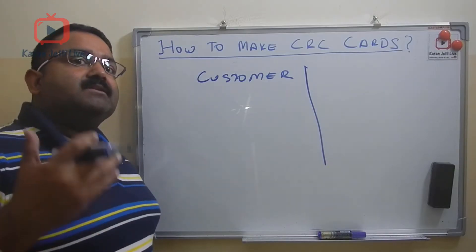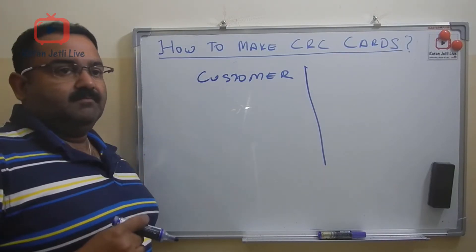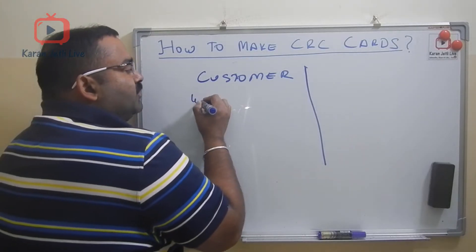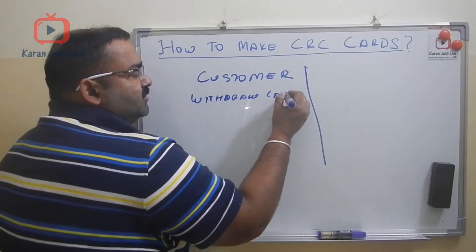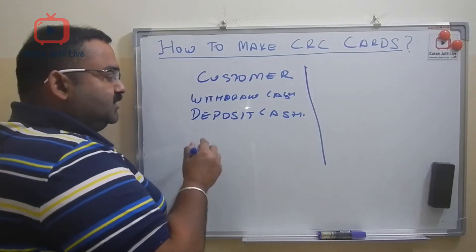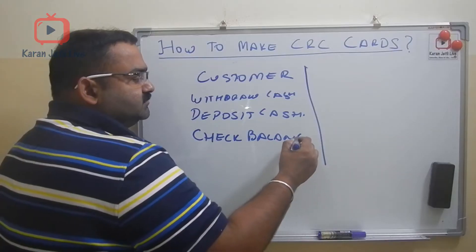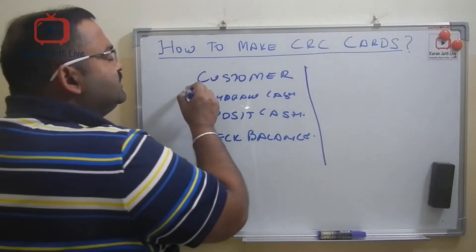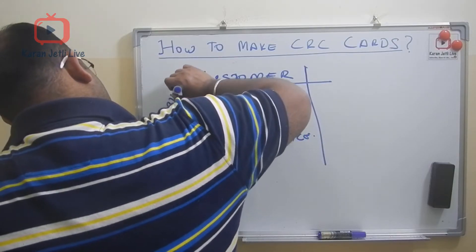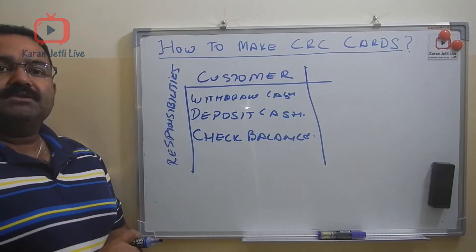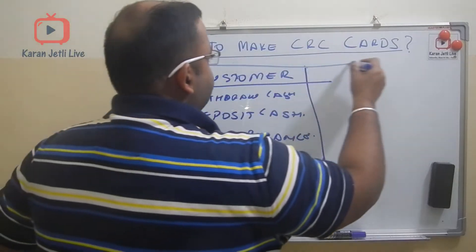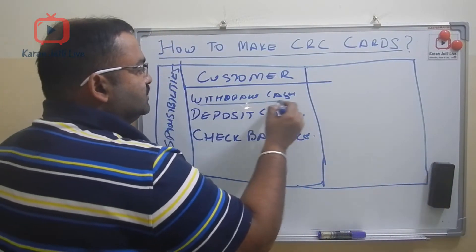On one side of the CRC card I will write the main responsibilities of Customer. What can a customer do? He can withdraw cash, he can deposit cash, and he can check his balance, and so on. These are the main responsibilities of Customer.